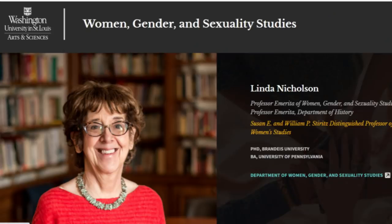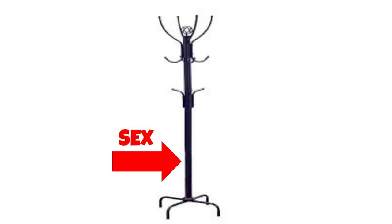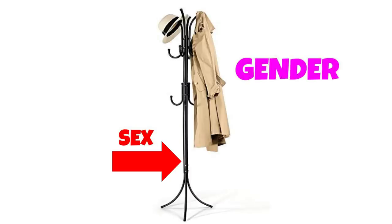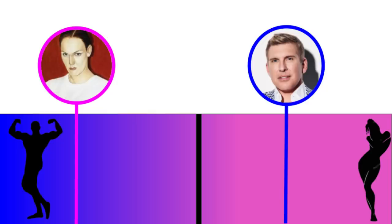Twenty years later, Dr. Linda Nicholson, in her 1994 paper 'Interpreting Gender,' calls this the coat rack view of gender. She reasons that our biological bodies are like coat racks, and they provide the site to which gender is constructed. They argue that gender should be looked at as a spectrum from masculinity to femininity, and it's superimposed on the coat rack of a person's biological body. A person's sex is determined by their genes and hormones, but their gender is something that they put on to express that gender identity.